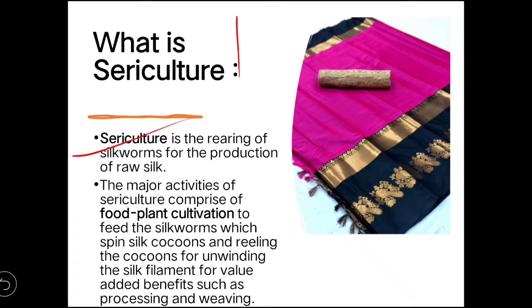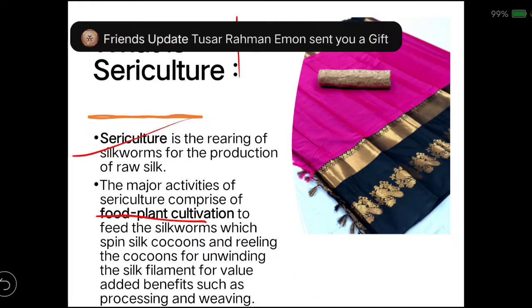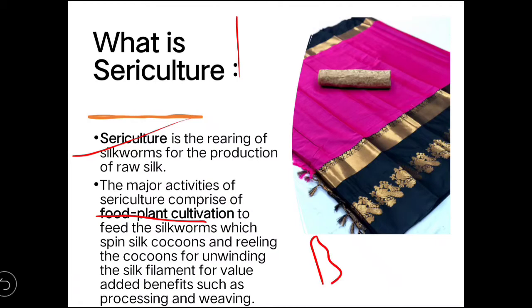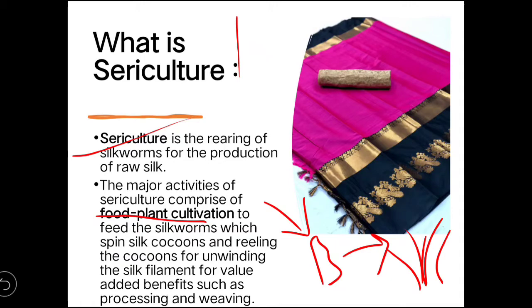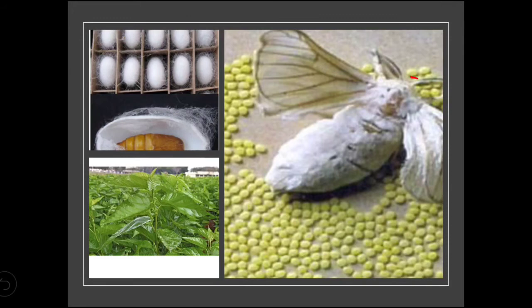The major activities of sericulture comprise food plant cultivation to feed the silkworms. We have to cultivate the plant to provide food for the silkworm. Then we rear the silkworms, which produce the cocoon, and after reeling that cocoon you can find the silk filament.